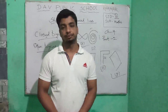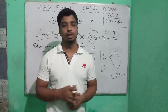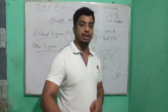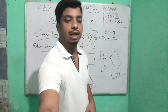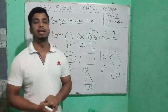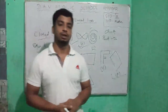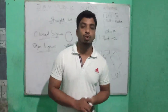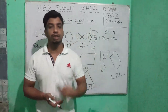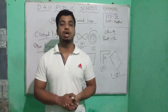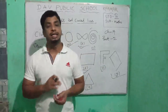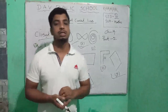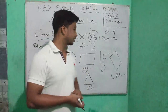So these are closed figures and open figures. Next, simple closed figures — a simple closed figure is a figure which does not intersect itself. It is called a simple closed figure.